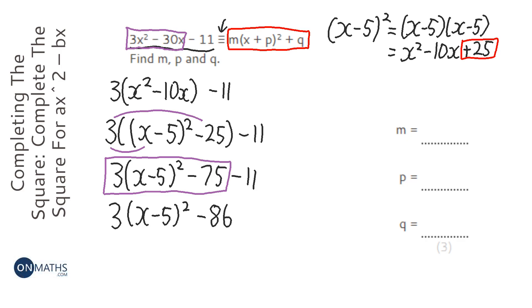We've got a number times a bracket, in the bracket x plus a number squared and then plus another number. So m is 3 because that's the number before the bracket. The p inside the bracket is minus 5, and be careful to have the minus there because it's plus in the question. And the q is also minus but it's minus 86.